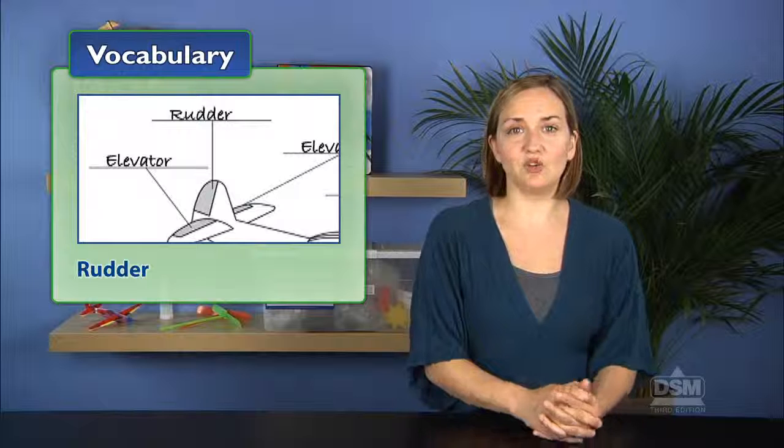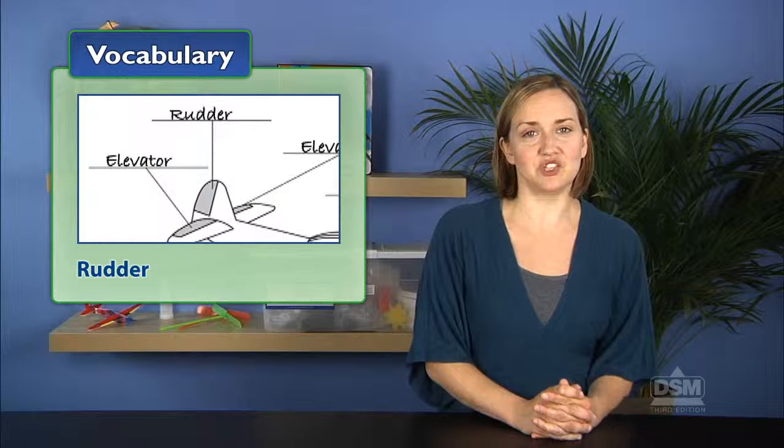Once again, direct students' attention to the diagram of the plane on part A of their activity sheets. Point out the rudder, the single flap located on the vertical stabilizer of the tail assembly.